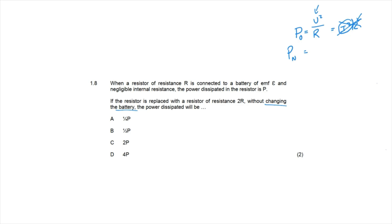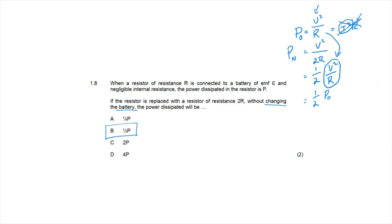The original power is P = V²/R. The new power is V²/(2R) = ½·(V²/R) = P/2. The correct answer is option B. We use the V²/R formula because voltage remains constant while only resistance changes, allowing a direct comparison between the two circuits.